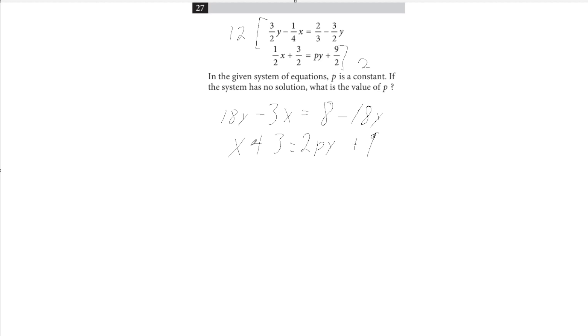Now we will combine like terms. Standard form for equations is something in the form ax plus by equals c. So that's what we're going to try to emulate. I'll move this negative 18 over to this side, so for equation 1, it becomes 18y plus 18y, 36y minus 3x equals 8.